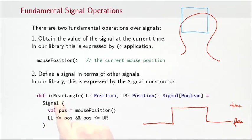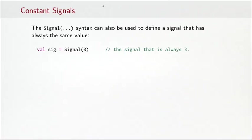Here's how I would define it. I would define the signal inRectangle which takes as parameters the coordinates of the rectangle given as a lower left corner and an upper right corner. And it's defined by this expression here. So what that says is that at each point in time I return the signal that looks at the mouse position at the same point in time, at the current point in time, and returns whether that position is between the lower left and the upper right corners.